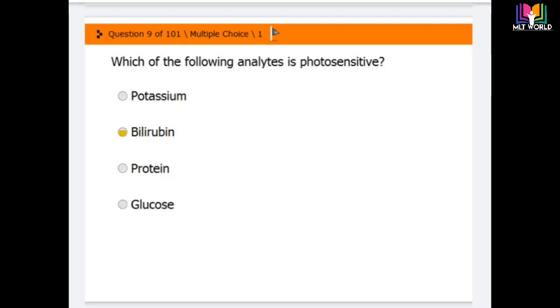Question number nine: Which of the following analyte is photosensitive? Options are potassium, bilirubin, protein, and glucose. The correct answer is bilirubin. Bilirubin is very sensitive to light, so whenever bilirubin test is coming, we have to perform quickly or otherwise we should not expose to the light, because if it is exposed to light, if serum has more color, it will decrease and affect the value of the result.